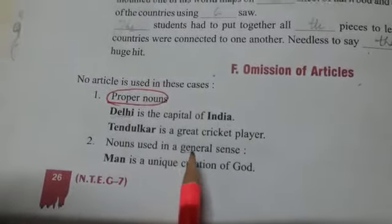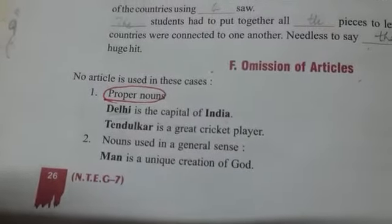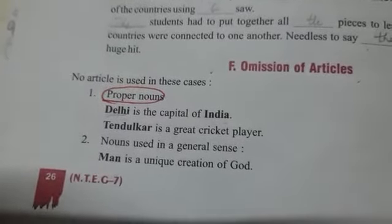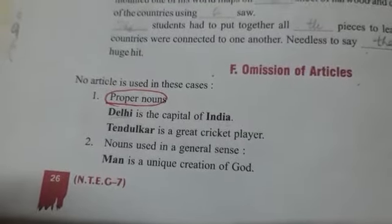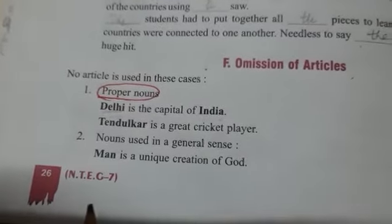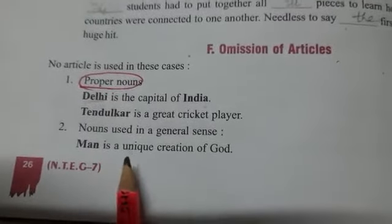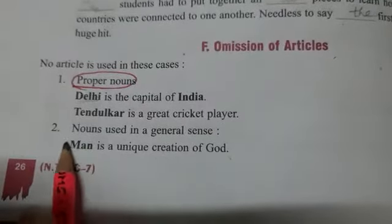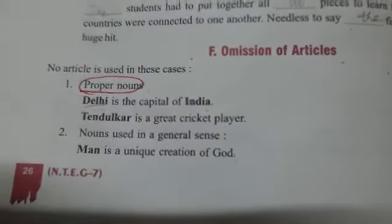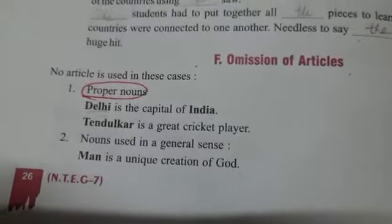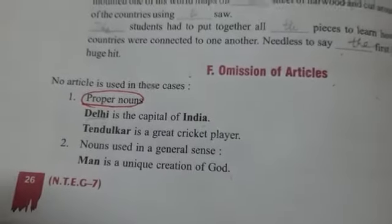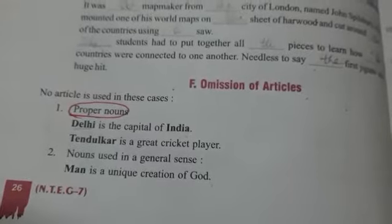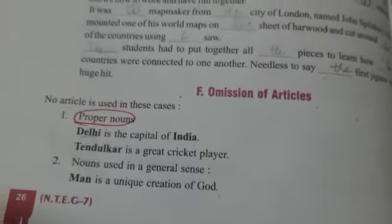The second case is nouns used in a general sense. Jab noun ko general sense mein use karna hai, that means general hi baat karni hai. For example, 'Man is a unique creation of God.' Man ko general sense mein use kiya hai — kisi ek particular man ke baare mein baat nahi kar rahe hain.